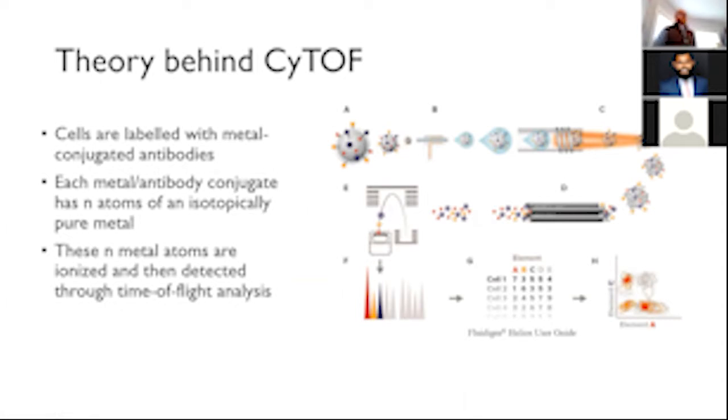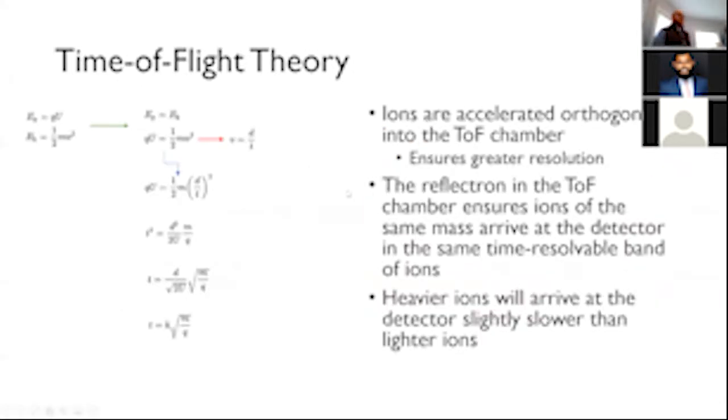So briefly, just a quick theory behind Cytoff before we really dig in, just for a high-level overview. So as most of you probably know, the cells are labeled with metal conjugated antibodies. They're then put through a nebulizer, aerosolized, and then injected into a plasma, where they're atomized and ionized. And then they go through a series of filtration and focusing steps, and then are detected based on their time of flight, exported as unique spectra, and then transformed into FCS files. And we'll get into each of these components along the way.